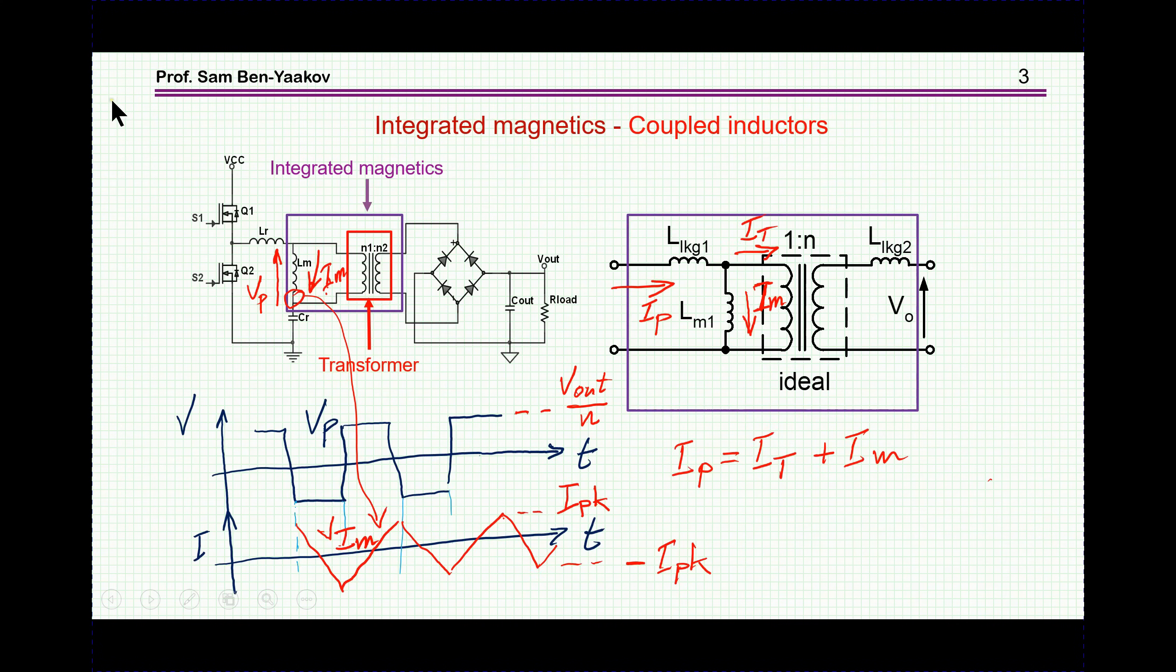Looking more closely here, we see that the current through this inductor, this parallel inductor, is going to be triangular shaped because we have a square wave voltage across it.